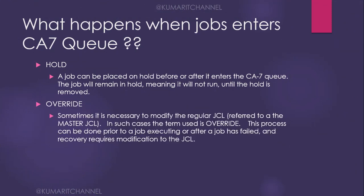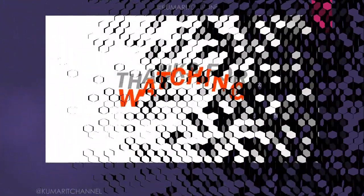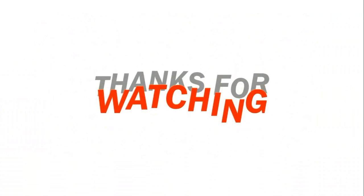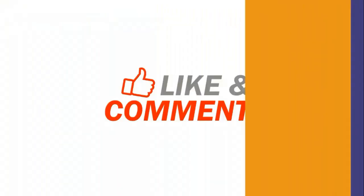Sometimes it is necessary to modify the regular JCL, referred to as the master JCL. In such cases, the term used is override. This process can be done pre-job execution or after a job has failed — for example, overwriting with a particular dataset and running it. Recover requires modification of the JCL.